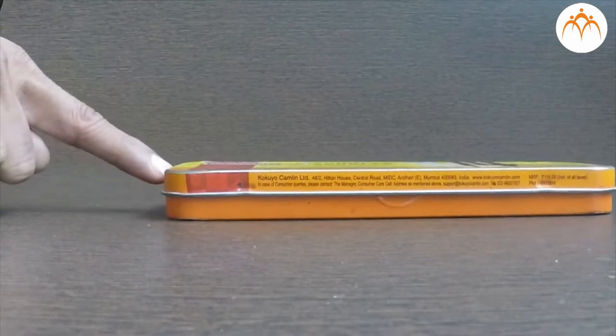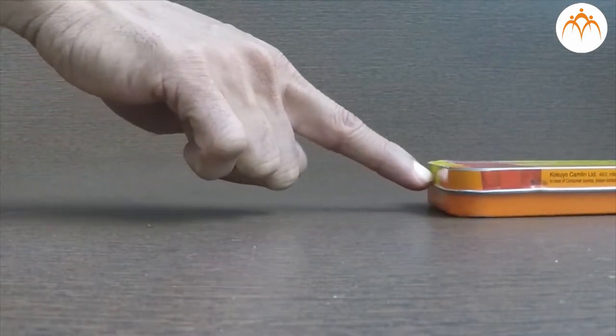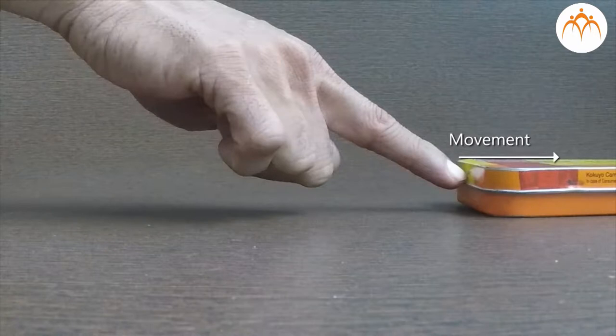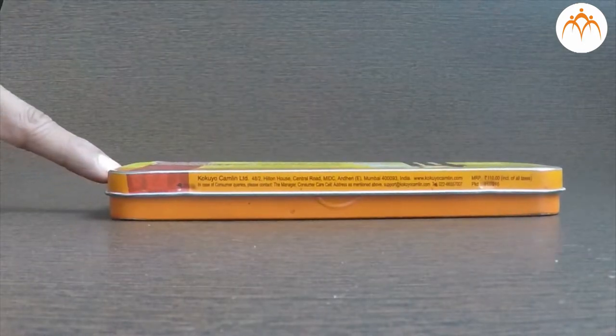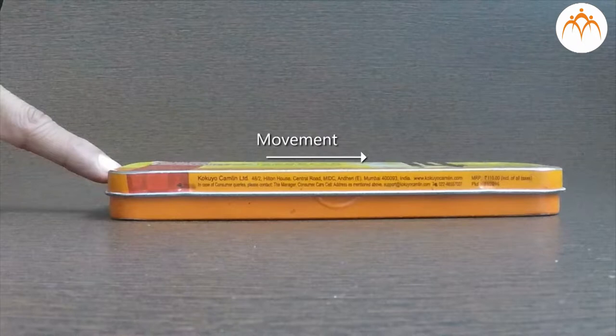Friction. Let me take this compass box and try to push it. It takes some effort to move it forward. What is preventing its movement? I am pushing, I am applying force. Direction of my force is towards your right. There must be some other force which is trying to oppose this. This force is called friction.